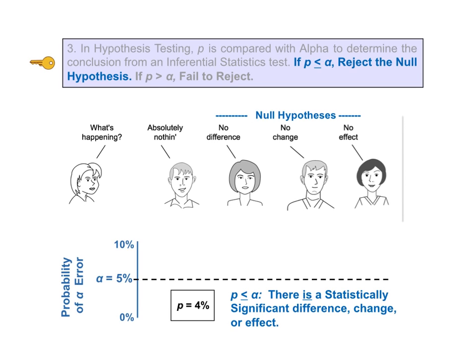KTU number 3 states: in hypothesis testing, P is compared with alpha to determine the conclusion to be drawn from the test. If P is less than or equal to alpha, then we reject the null hypothesis. The null hypothesis states that there is no difference, no change, or no effect. And if P — the probability of an alpha error — is less than alpha, then there is a statistically significant difference. This contradicts the null hypothesis, so our conclusion from the test is to reject the null hypothesis.